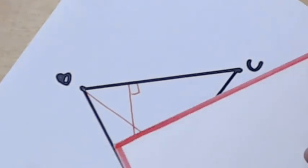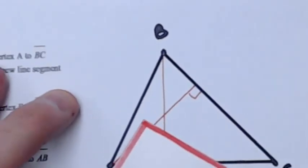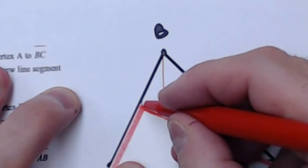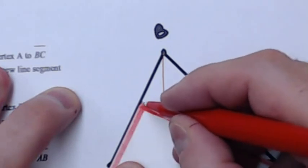And then finally for point C, let's see. That's about right. So we have a right angle here from using the note card,